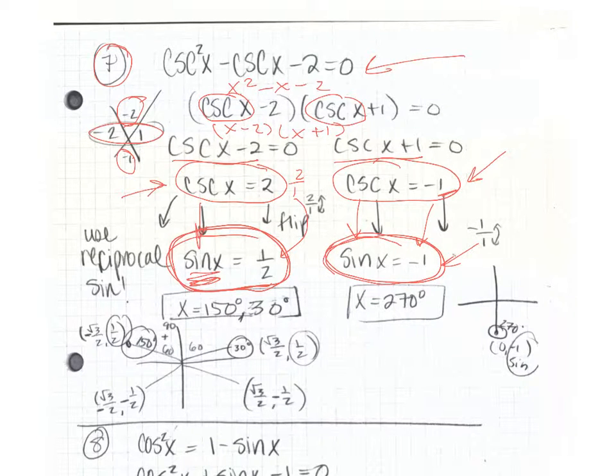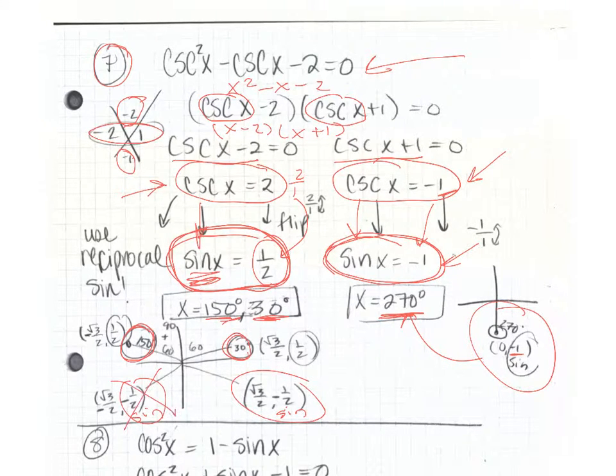The sine is negative 1 at 270 degrees, so that's one of our answers. And the sine is 1 half at 30 degrees and at 150 degrees. So those are our three answers: 30, 150, and 270 degrees. Notice, sine is negative 1 half here and here, but we can't include those because we only want positive 1 half.